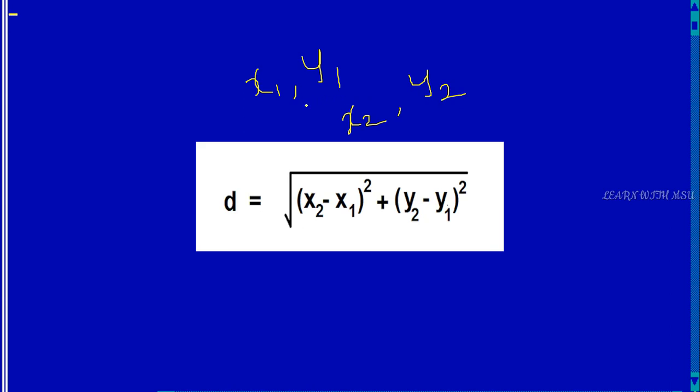What is the distance value? It is a square root of (x2 - x1) whole square plus (y2 - y1) whole square. So it is a straight formula. Directly you can apply this formula to get the distance between the two points x1, y1 and x2, y2.